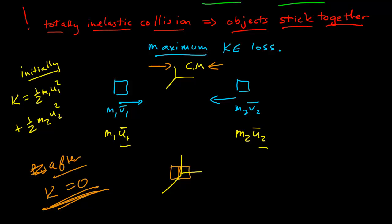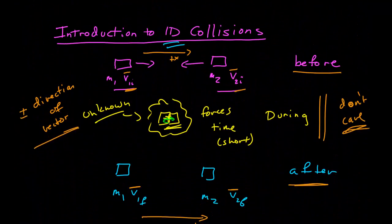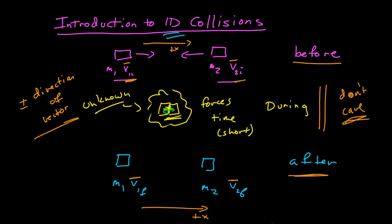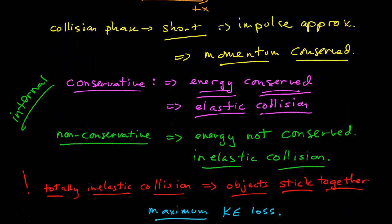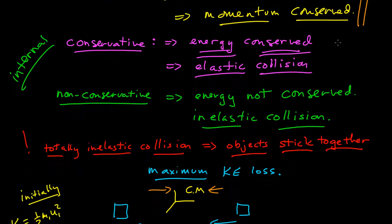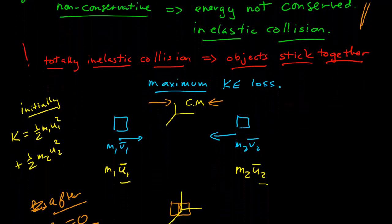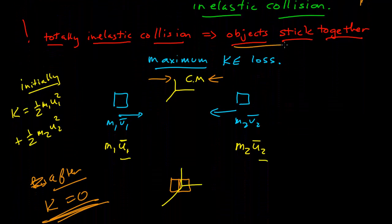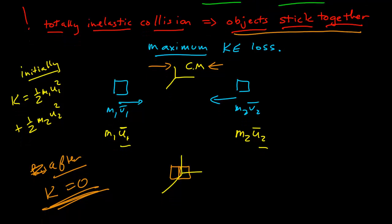So collisions are a way that, the study of collisions, are a way we're trying to determine what happens to systems after a collision, giving information about their conditions before the collision, knowing as little as possible about the interactions between them. And we conserve momentum, and energy is conserved if we have elastic. It's not conserved if we have inelastic. And then totally inelastic collisions, those where the objects stick together, leads us to our maximum kinetic energy loss.